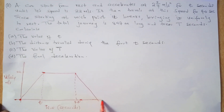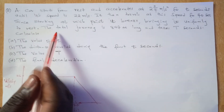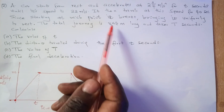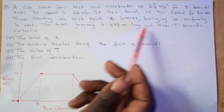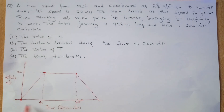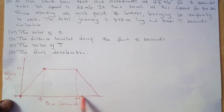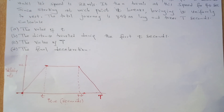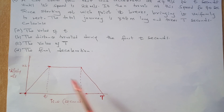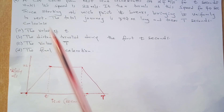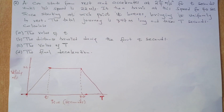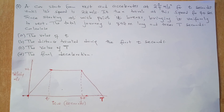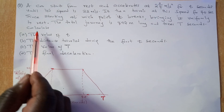After 40 seconds, the car brakes and decelerates uniformly back to rest, returning to the x-axis. The total distance for the whole journey is 847 meters. The total time from start to finish is capital T seconds. Draw a sketch that represents all this information.